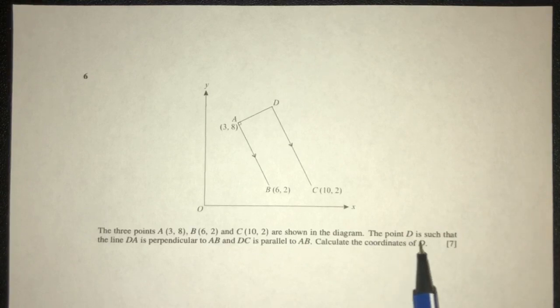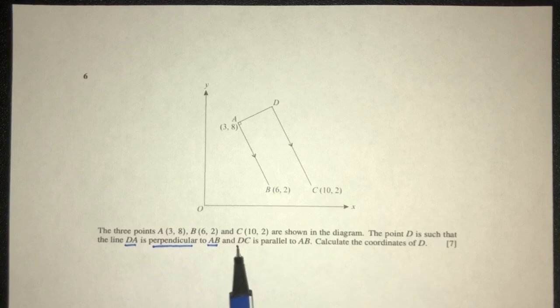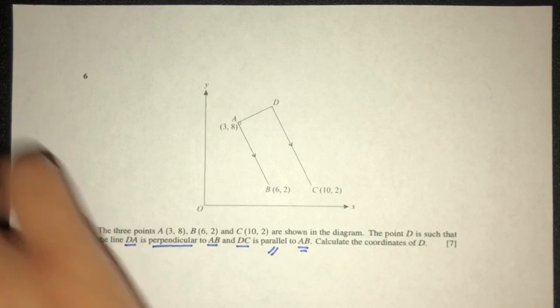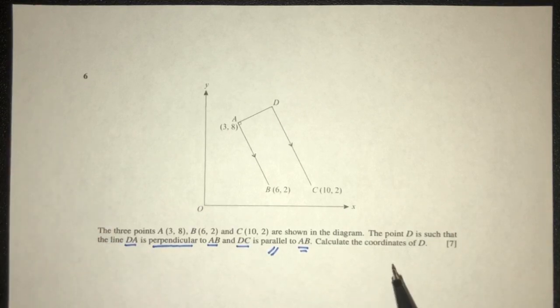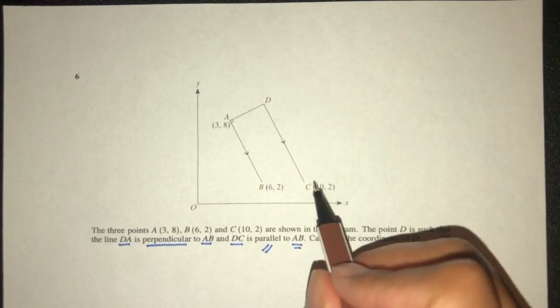The point D is such that the line DA is perpendicular to AB, so the line DA is at a right angle to the line AB. And DC is in the same direction as AB. As we can see here, they are in the same direction. We have to use this information to find the value of D, the point D.